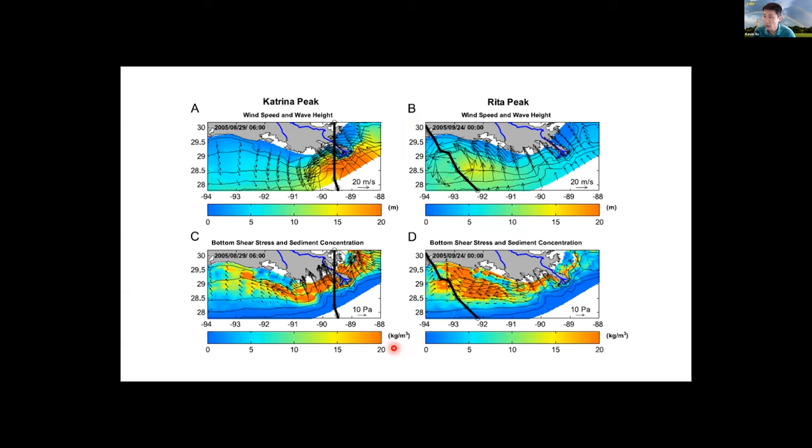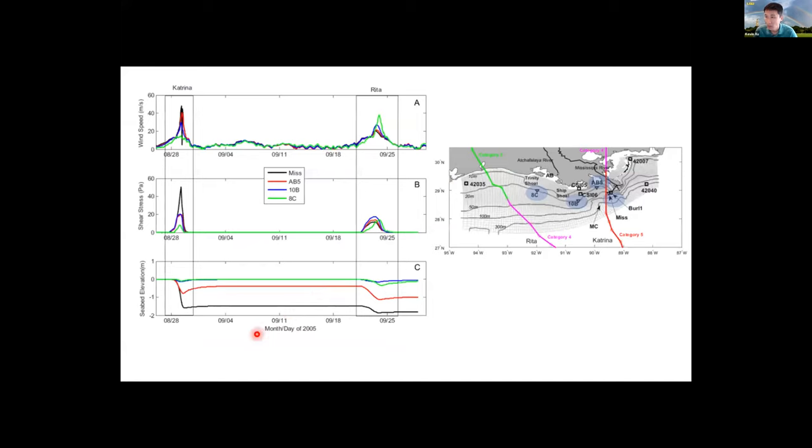Now let's take a look at the conditions during the peak of the hurricane. Again, left two panels for Katrina, right two panels for Rita. During the passage of Hurricane Katrina, right before the hurricane made landfall, you can see very large wind field, very strong, very tall waves east of the track line. But if you look at the bottom shear stress, you can see lots of high bottom shear stress in the inner and middle part of the continental shelf. To some degree, the bottom shear stress is mainly controlled by the topography asymmetry.